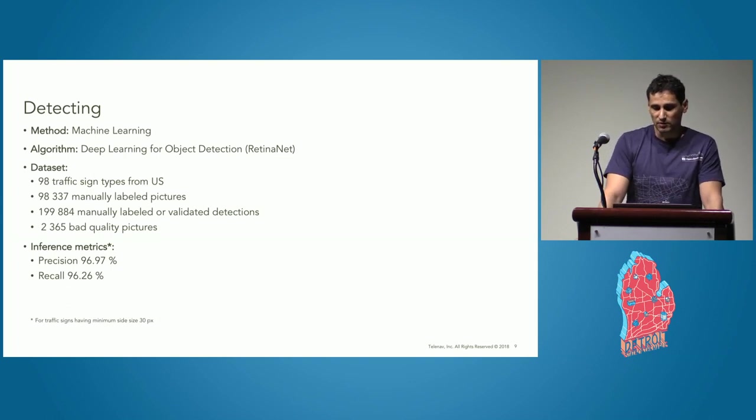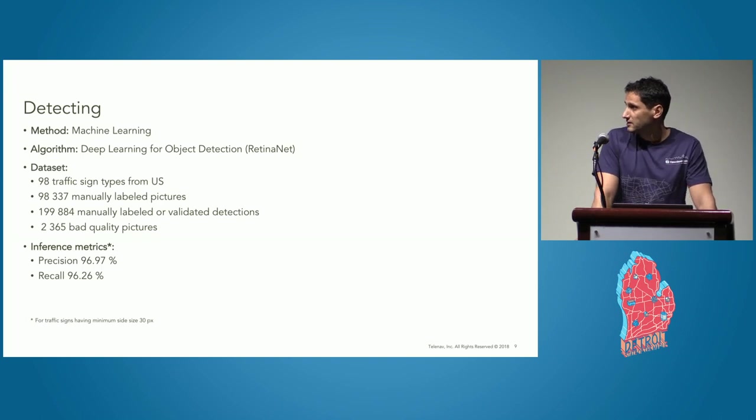In this slide, there are some technical details about how we did that. As a method, we use machine learning, which is some kind of standard today. As algorithm, we use deep learning for object detection, mainly RetinaNet. As dataset, we had almost 100k manually labeled pictures containing almost 200k manually labeled and validated detections. All of them contain 98 different traffic signs or classes, as we call them.